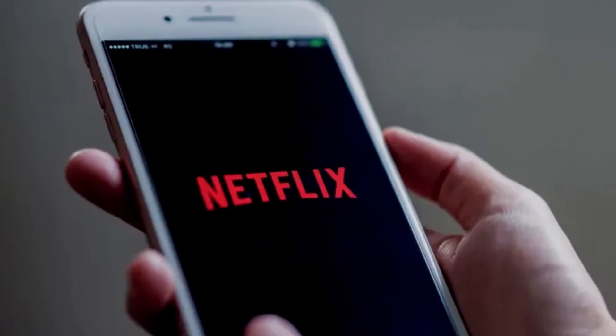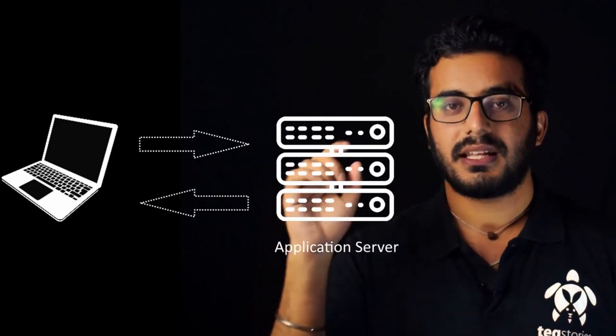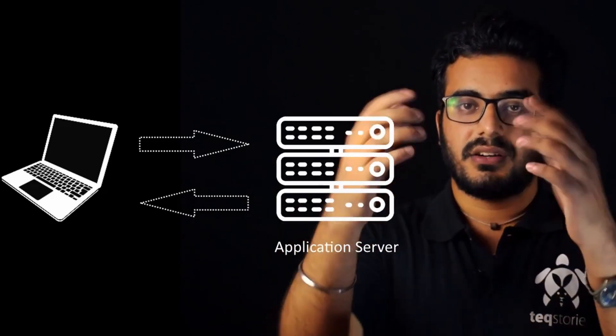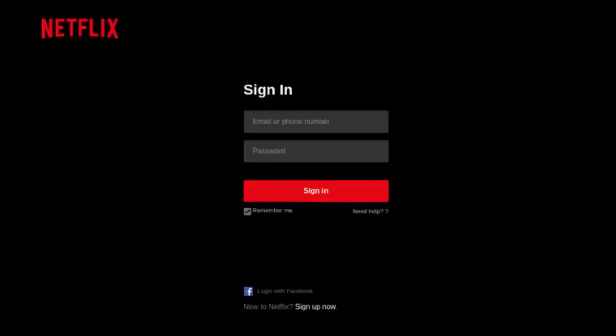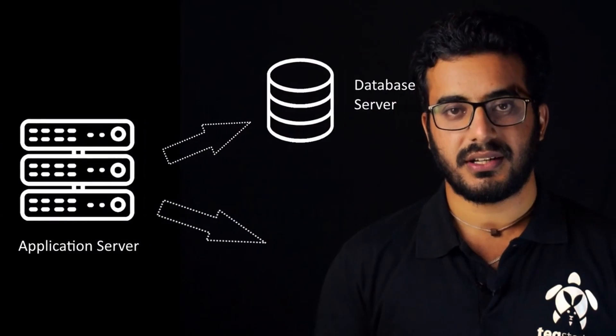Now let's break it down from the IT perspective. When you first go to the Netflix application or type the Netflix URL on your browser, you hit the Netflix server. You may have heard this when people say 'the Facebook server is down' — there is a server involved in this process. When you hit netflix.com, the server returns a page asking for your credentials — your username and password — which are sent back to the server and cross-checked against a database.